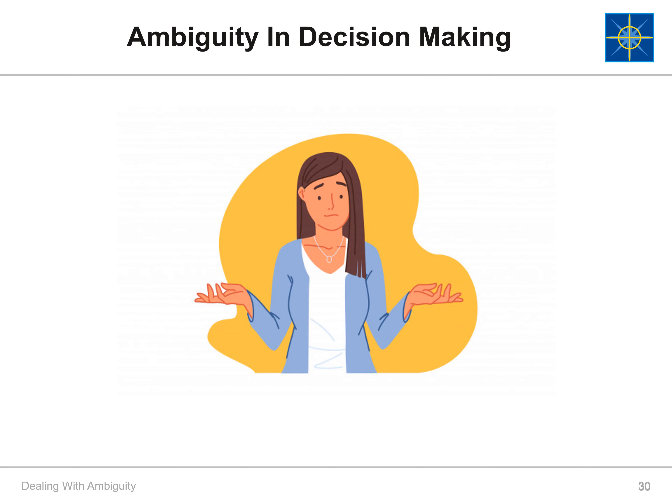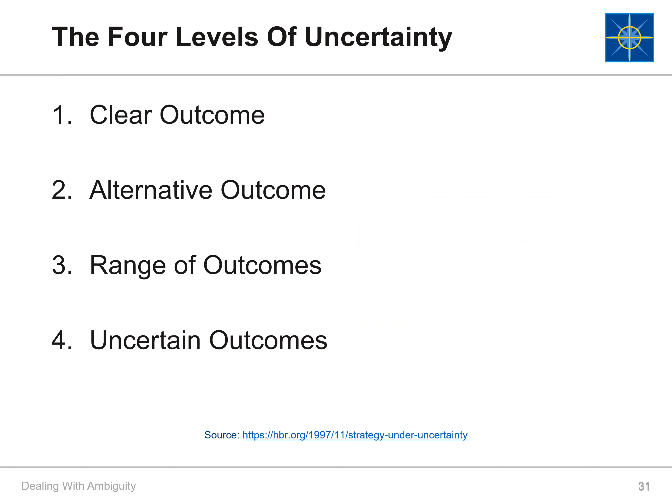Now that we know about the four types of decisions and how biased data can affect our decisions, how do we make decisions in ambiguous or uncertain situations? Uncertainty simply means the state of being uncertain or having some doubt or hesitancy. Let's discuss the four levels of uncertainty: level one is clear outcome, level two is alternative outcome, level three is range of outcomes, and level four is uncertain outcomes.